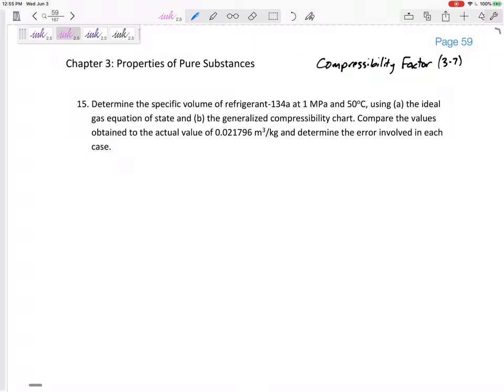Okay, so let's look at some problems where we're using not only the ideal gas law, but the ideal gas law with the compressibility factor to solve for something, and we're just going to be talking about solving for a specific volume. Let's determine the specific volume of refrigerant 134a at 1 MPa and 50 degrees C using (a) the ideal gas equation or (b) using the generalized compressibility chart.